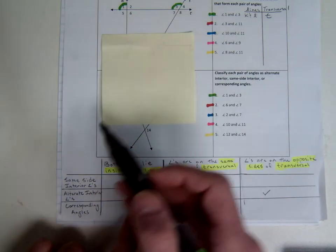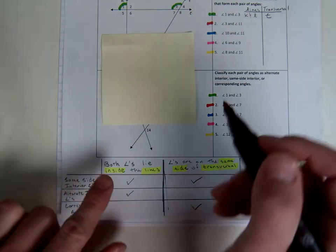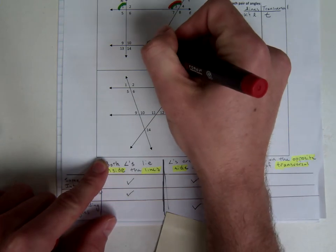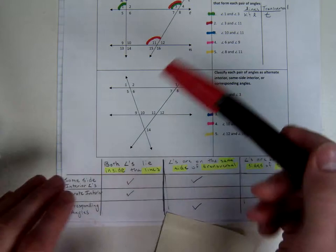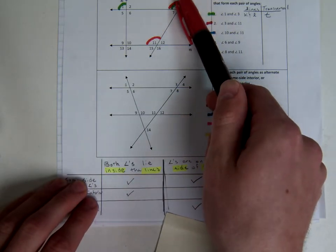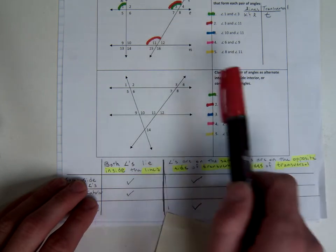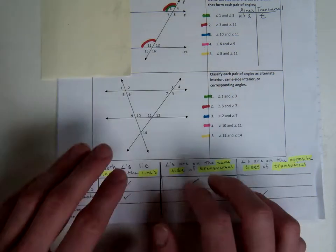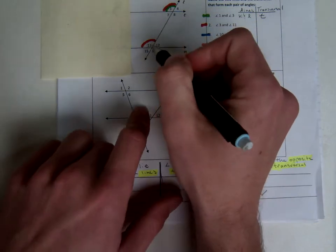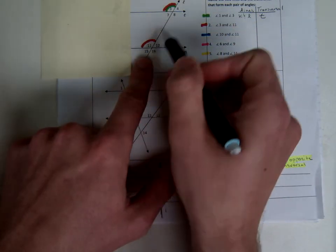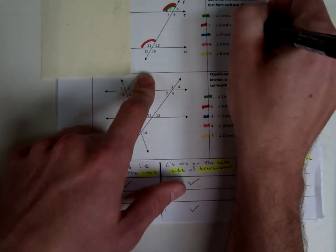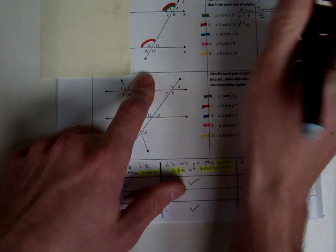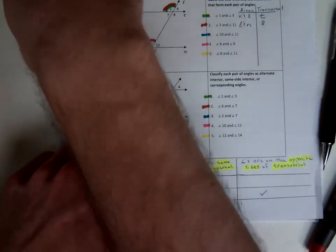Moving on to the second pair, labeled in red — angles 3 and 11. In this case, I can see that I'm working with lines T and N, as those are the ones that make up these angles. Line K is not involved, so I'll cover that up so it doesn't confuse me. We can clearly see that the two lines are intersected by line L, making line L our transversal in this case.